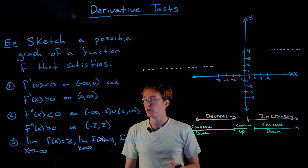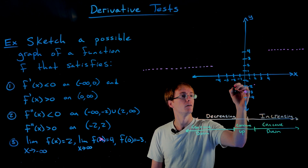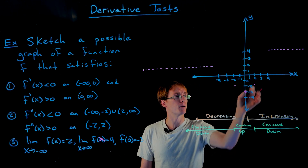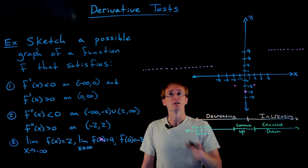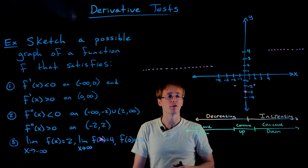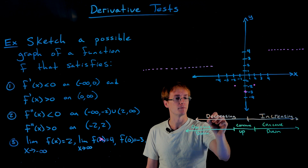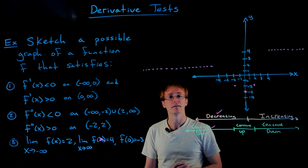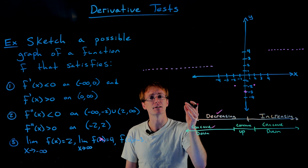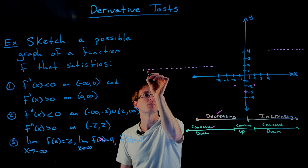We also have inflection points at x equals negative two and positive two, which are on either side of our minimum and must be above it. On the far left interval, to the left of x equals negative two, our function is decreasing and concave down. So heading away from the horizontal asymptote at y equals two, the function goes down while bending downward until we reach x equals negative two.